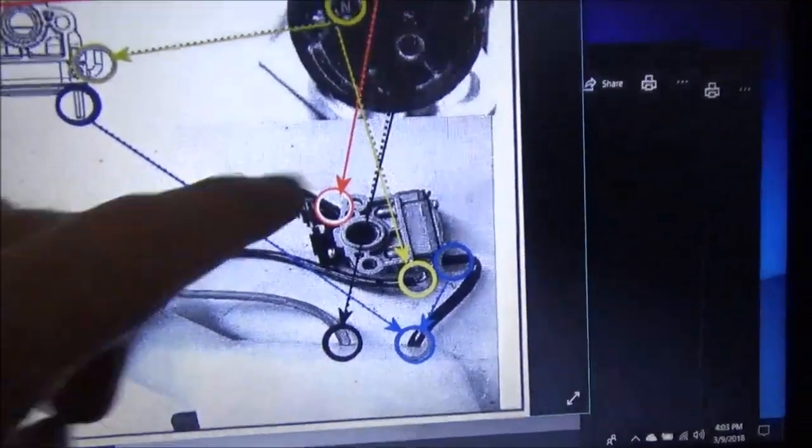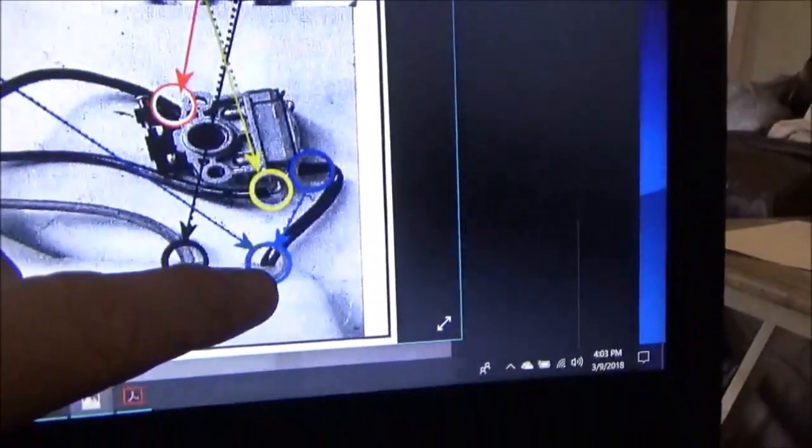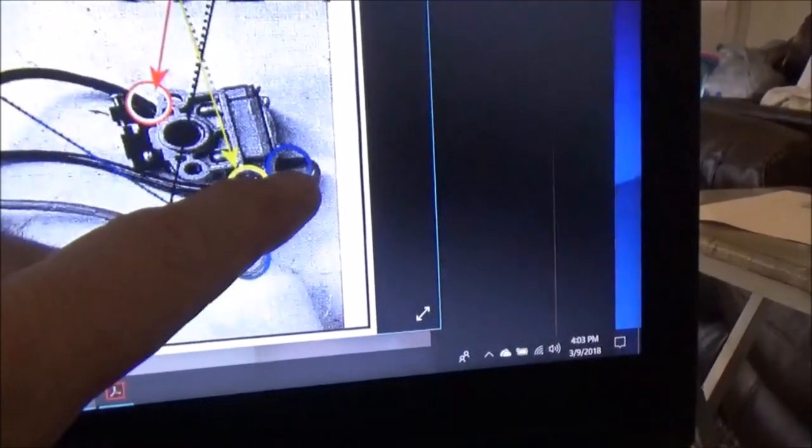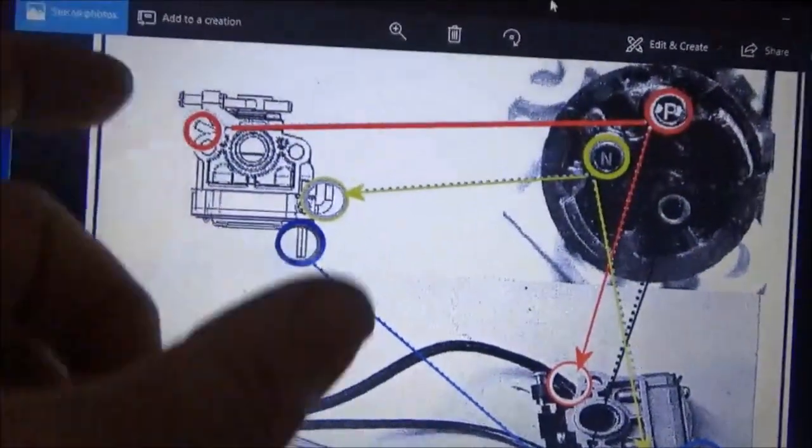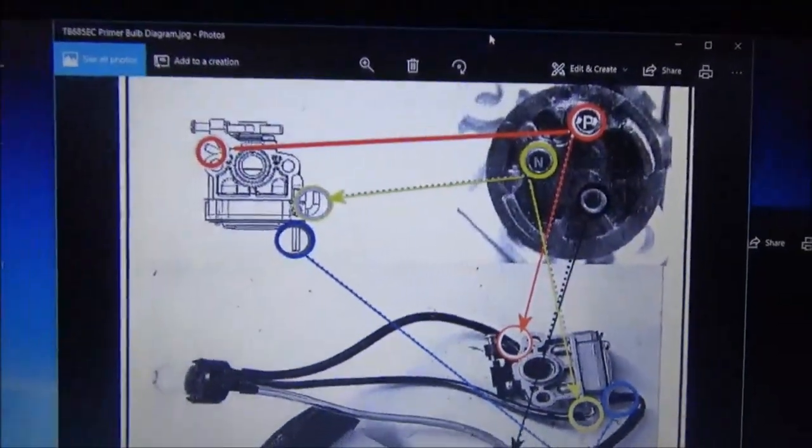Anyway, return goes into the primer bulb there. Filter comes out, goes into the bottom of the carburetor, the side actually, this would be like that.